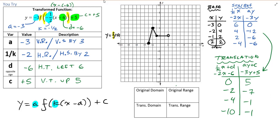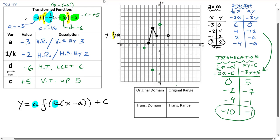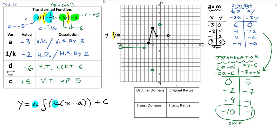Now let's graph the final points: (0, 5) — start here; (-2, -7) — down here; (-4, -1) — here; and (-10, -1) as an open point. Make sure to use a ruler — I'm free-handing it, which doesn't look great, but there's the final graph.